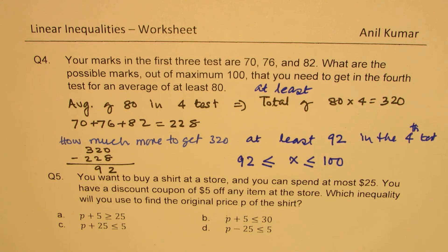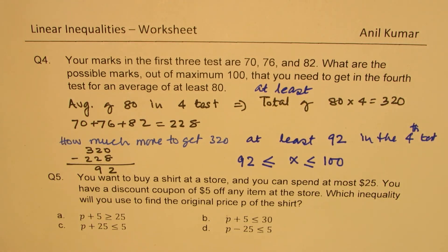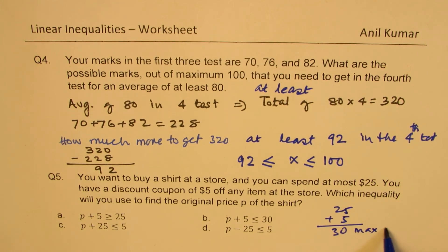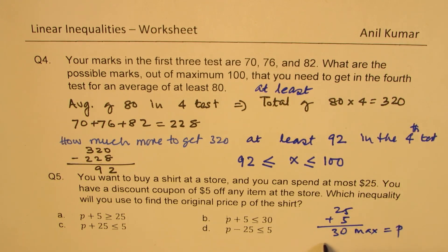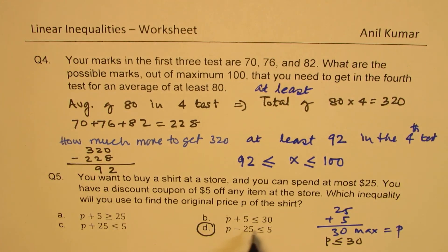Question number 5: you want to buy a shirt and can spend at most $25, but you have a $5 discount coupon. So effectively you can spend up to $30. We need P less than or equal to 30. Looking at the multiple choice options, solving the last option by bringing 25 to the right side gives P less than or equal to 30. So that is the correct answer; the others are incorrect.